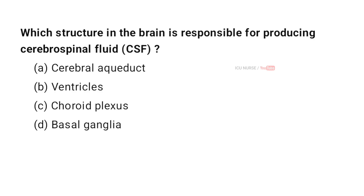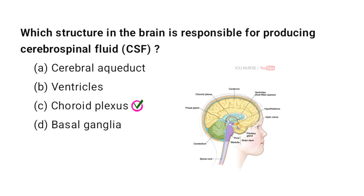Which structure in the brain is responsible for producing cerebrospinal fluid (CSF)? A. Cerebral aqueduct, B. Ventricles, C. Choroid plexus, D. Basal ganglia. And the correct answer is C. Choroid plexus. The choroid plexus is found in the ventricles of the brain and filters blood to produce CSF, which cushions the brain and spinal cord.